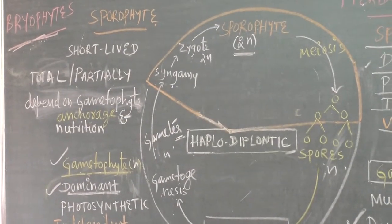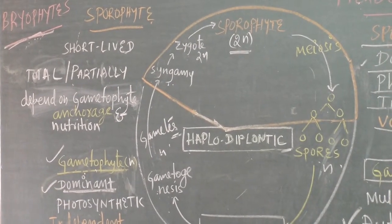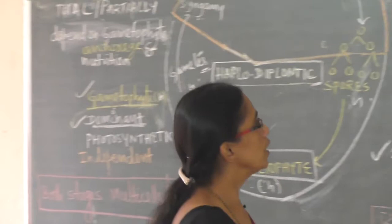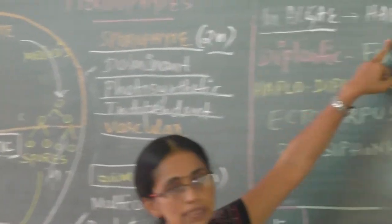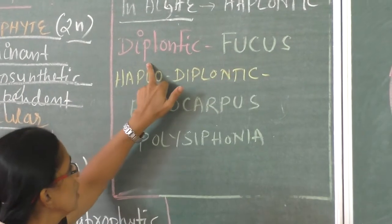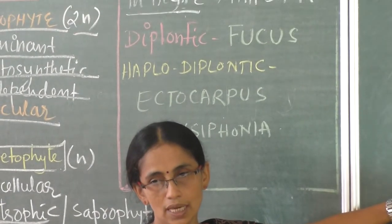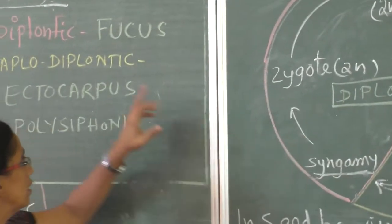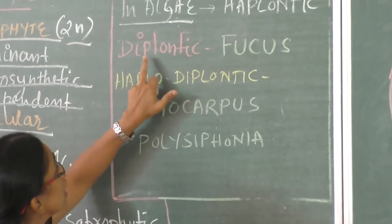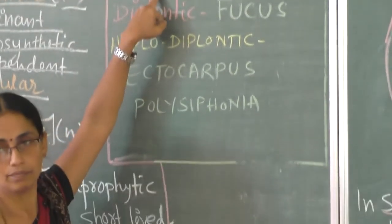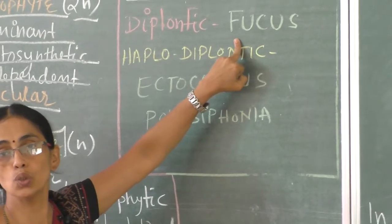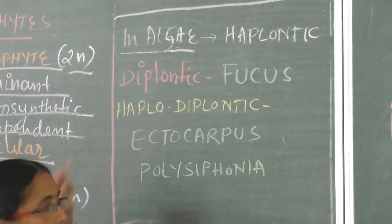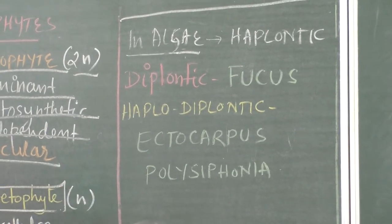To summarize: the first life cycle is haplontic, seen in algae such as Spirogyra, Volvox, and Chlamydomonas — though there are a few exceptions. The second is diplontic, seen in seed-bearing plants like gymnosperms and angiosperms. Additionally, the alga Fucus also shows a diplontic life cycle. The third is haplodiplontic, seen in bryophytes and pteridophytes.